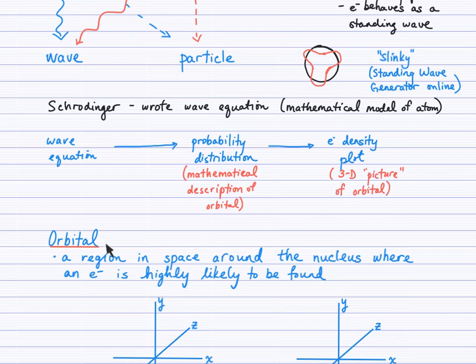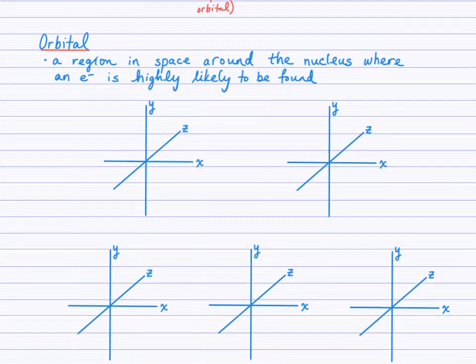So what is an orbital then? Well, it's a region in space around the nucleus where an electron is highly likely to be found. Now, why do I say highly likely? Because Schrodinger's wave equation produces a probability distribution. There isn't 100% certainty. We're basically looking at a prediction of where the electron could be found at any moment in time, and we're about 90% certain that it is there.